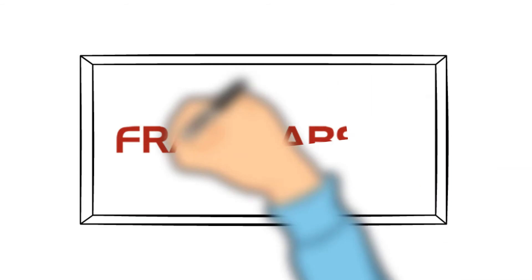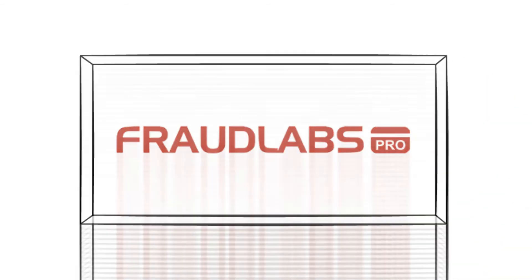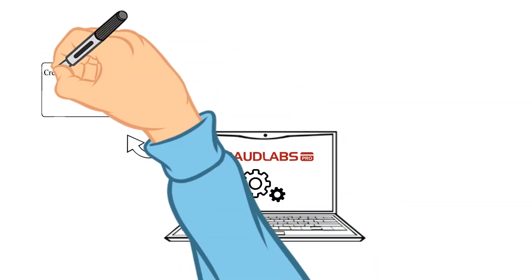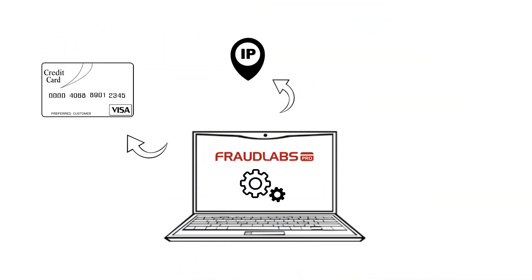In order to make the fraud detection easier, you can try the FraudLabs Pro service. FraudLabs Pro service helps to process the credit card BIN info along with other order details like IP address, shipping address and so on.